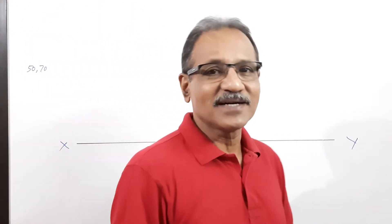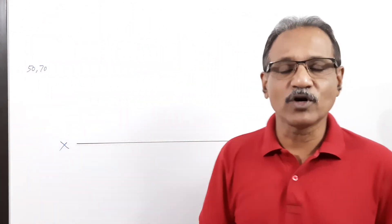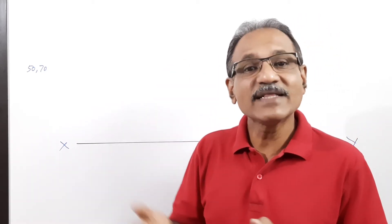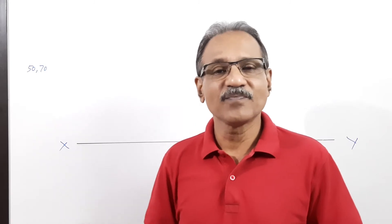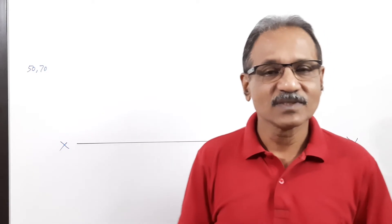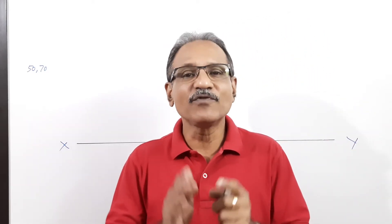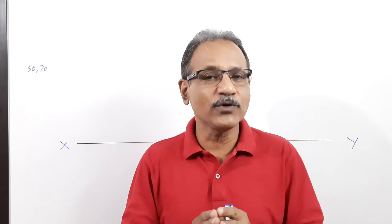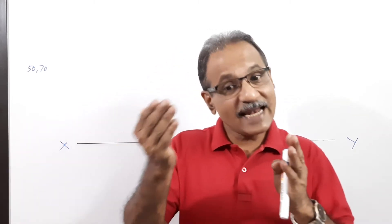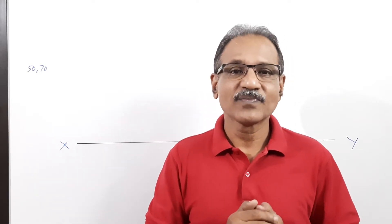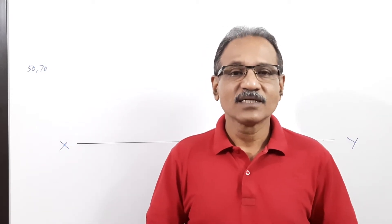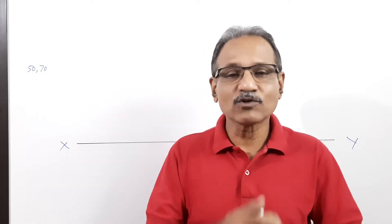An isosceles triangular lamina with 50 mm base and 70 mm altitude has its base on VP in such a way that the front view is an equilateral triangle. The full condition is: the lamina rests on VP on its base with a leg on HP such that the front view is an equilateral triangle.